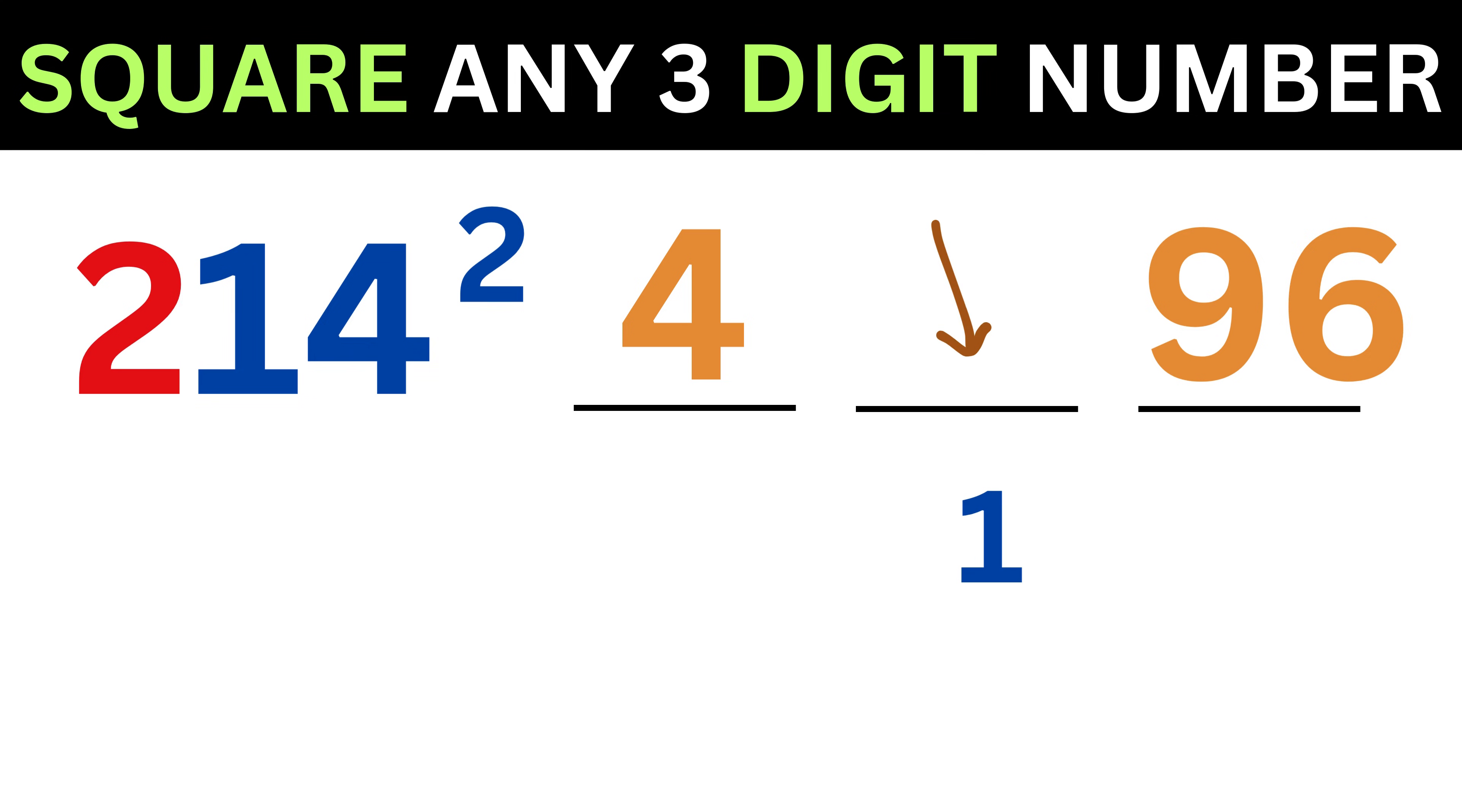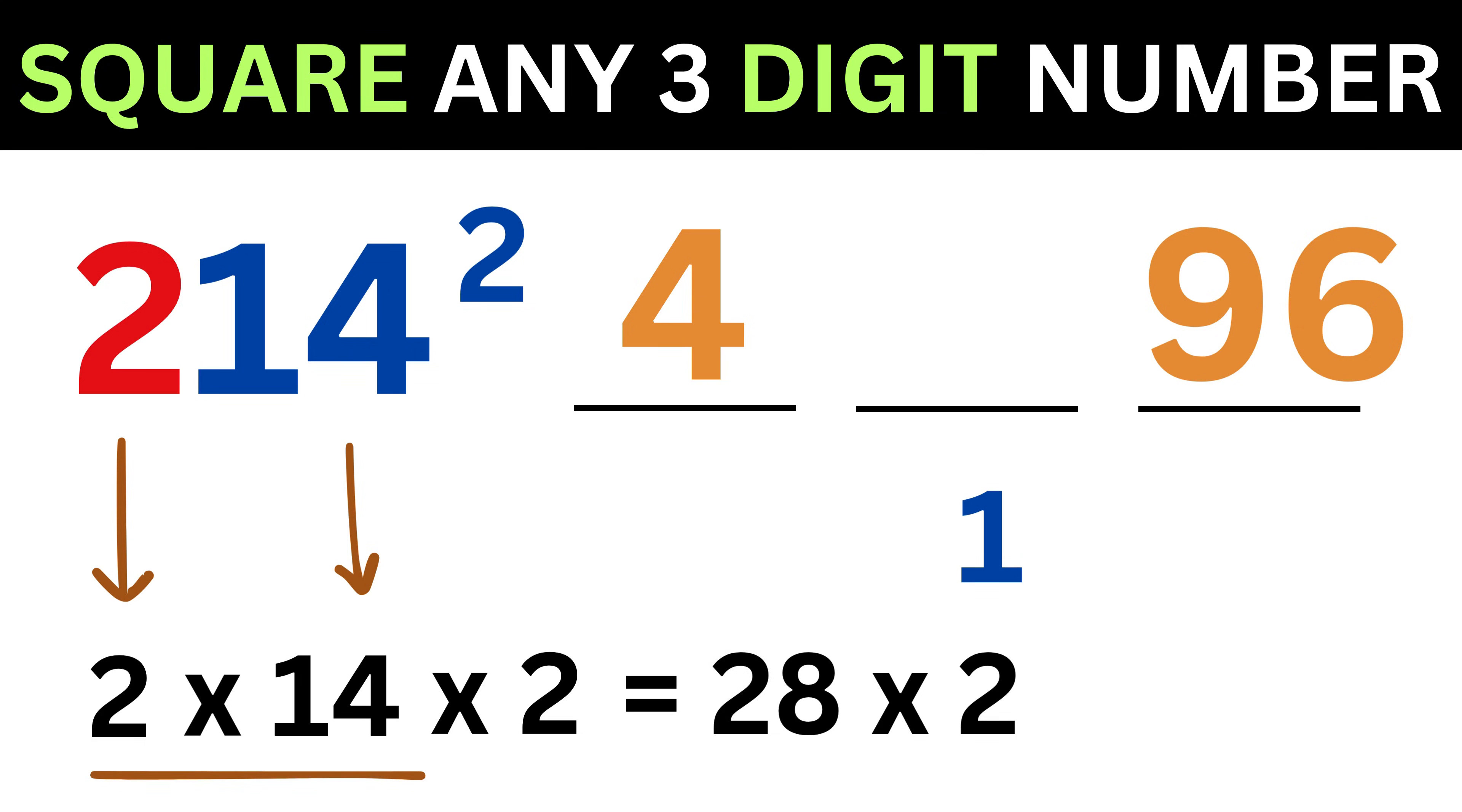Now consider the middle part. Take this 2, and then take this 14, and then multiply both of them with 2 to get 2 times 14 times 2, or 28 times 2, or 56. Now add this one to it to make it 57, and then put it here.